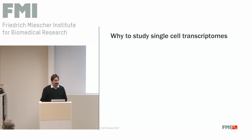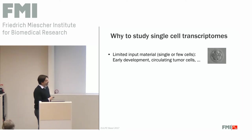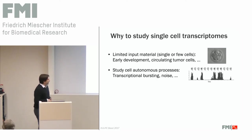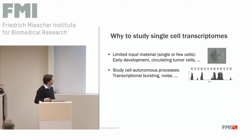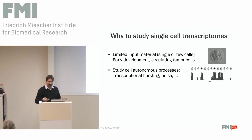Why would we at all want to study transcriptomes from single cells? One reason could be because you're interested in a system where you only get a few cells — like if you're studying mammalian development, you only get small embryos or sperm cells or oocytes, so the only way to look at them is if you're able to process single or few cells. Another reason might be if the processes you're studying are cell autonomous and not synchronizable across cells — one example being transcriptional bursting. Transcription of a gene is not a continuous process, but a more or less stochastic process consisting of phases where the gene is actively transcribed, making a couple of molecules of mRNA, then switching into a silent state. If you look at many cells at the same time, you're averaging out such processes.